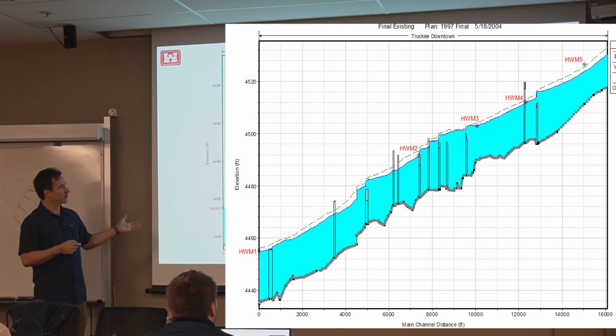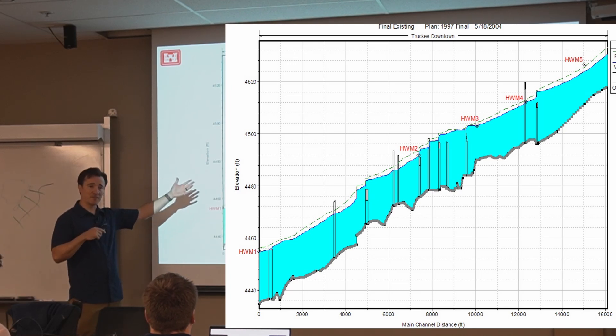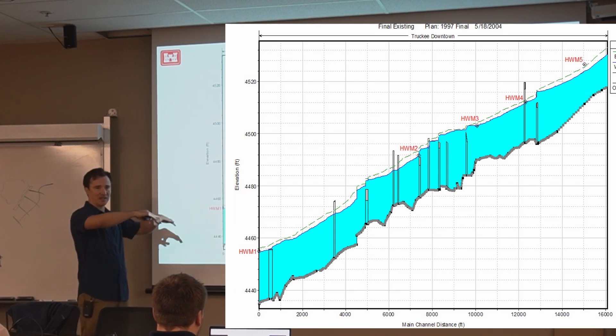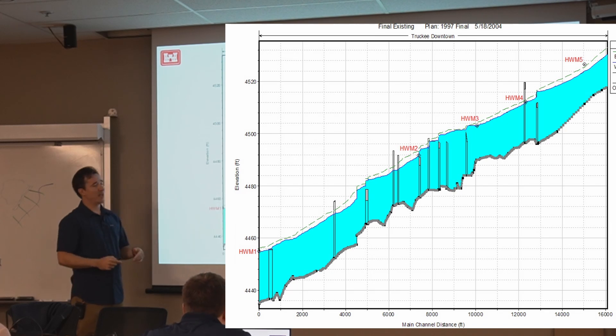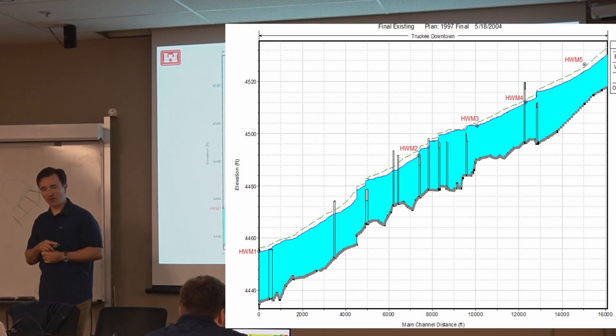So sometimes you'll see that the observed data doesn't quite hit the water levels, but maybe it's close to the energy grade line. Why would that be? Well, in this case, I believe it's because there's a bend. So Stan's going to talk about that. But at a bend, you have super elevation along the outside of the bend. And this gauge happened to be on the outside of the bend. And so as the flow went around the bend, it kind of, you know, it goes higher at the outside of the bend. And that, the energy grade line is more representative of that elevation. So that's why the energy grade line matched the gauge, whereas the water surface did not.